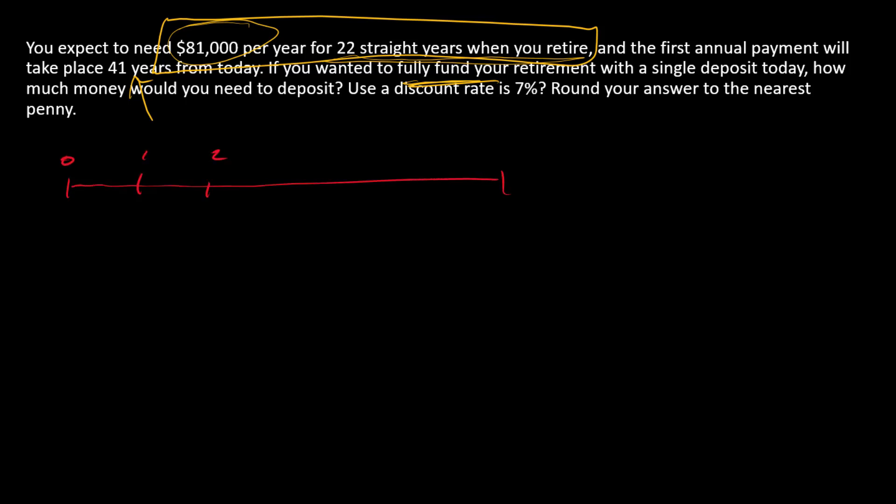Imagine you're in retirement. Here's the need. This is the cash flow stream that is needed, a 22 period annuity, the payment of $81,000. For this first step, we're calling this step one, we just need to find the present value of this retirement stream annuity.